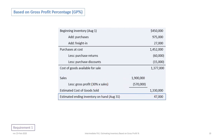The result is our ending estimated inventory on hand at August 31st of $47,000. We take our cost of goods available for sale and subtract our estimated cost of goods sold of $1,330,000, and what we have left over is $47,000.